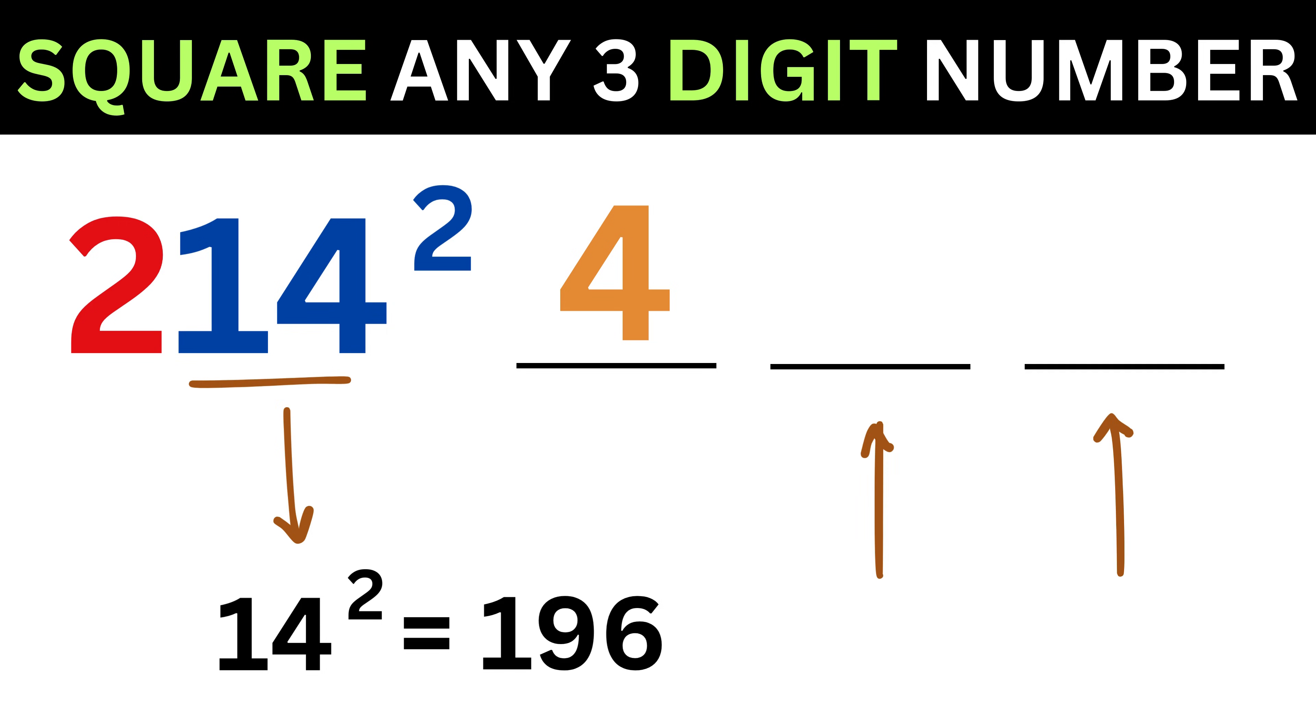Note that always in any part, except for the first one, we will write only two digits, and the rest of them will be considered as carry to the next part. So write here 96, and then take 1 as carry here.